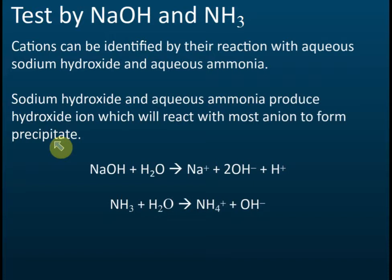Copper will form a blue precipitate because the copper ion is blue in color. So when sodium hydroxide or aqueous ammonia solution is added into solutions containing positive ions, they will most probably form a precipitate, and the color of the precipitate depends on the color of the positive ions.